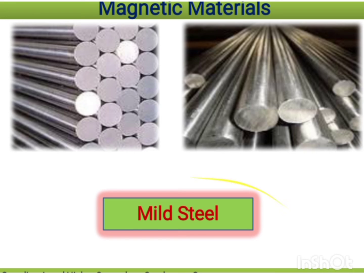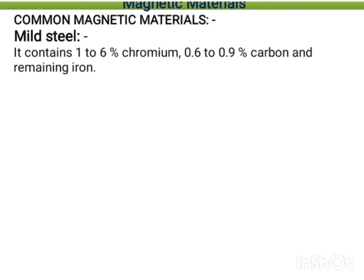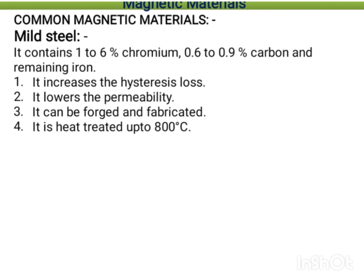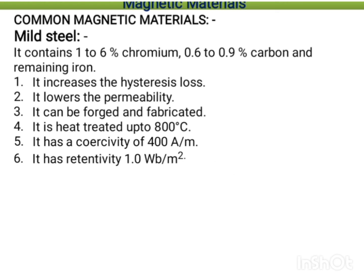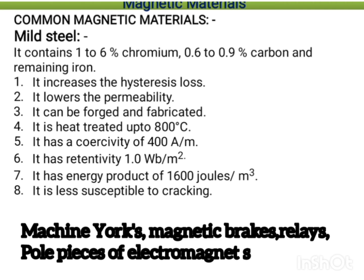Mild steel contains 1 to 6 percent chromium, 0 to 0.69 percent carbon, and the remaining percentage is iron. Its properties: it increases hysteresis loss; it lowers permeability; it can be forged and fabricated; it can be heat treated up to 800 degrees Celsius; it has a coercivity of 400 A/m; retentivity of 1.0 Weber per meter square; energy product of 1 kJ/m³; it is less susceptible to cracking; and it is used in machine yokes, magnetic brakes, relays, and pole pieces of electromagnets.